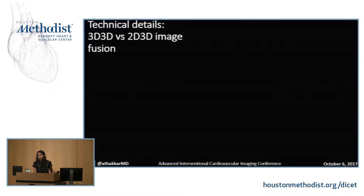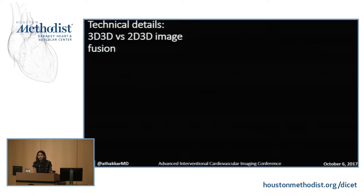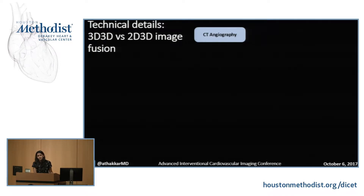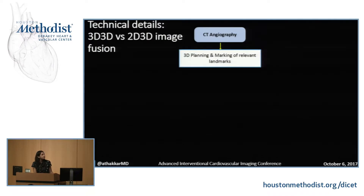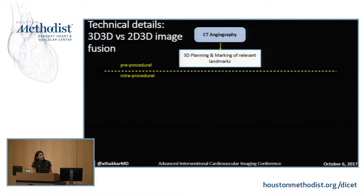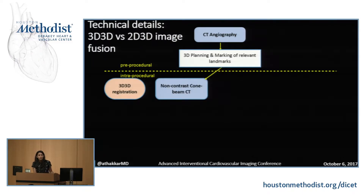So how do you perform image fusion? There are two pathways: 3D-3D fusion and 2D-3D fusion. As the name suggests, 3D-3D fusion involves the co-registration of a 3D data set with a 3D data set, and 2D-3D is the co-registration of a 2D data set with a 3D data set. The end result via both techniques is the same. The pre-procedural workflow for both is identical and starts with a CT angiogram used for pre-procedural planning and marking of regions of interest.